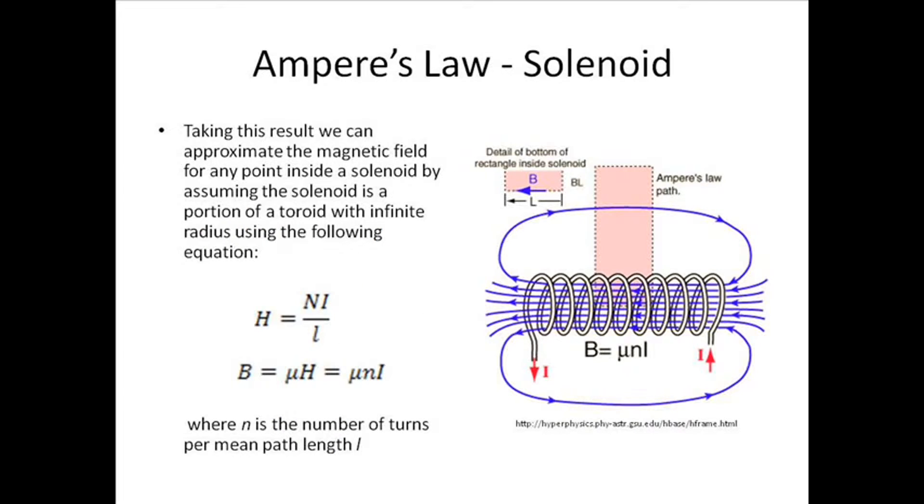My demonstration utilizes solenoids. So taking the result from the toroid, we can approximate the magnetic field for any point inside a solenoid by assuming that the solenoid is simply a portion of a toroid with infinite radius. The magnetic field can be calculated with the following equation: H equals NI over L.